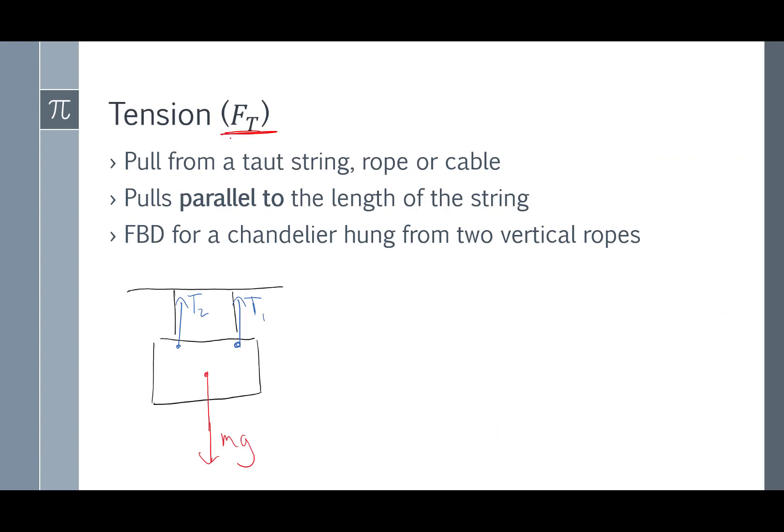Tension, called Ft, is a pull from a string, rope, or cable. And it's a taut string, rope, or cable, because if the string is not pulled tight, it's not going to actually apply any force. And the force is always parallel to the length of the string.